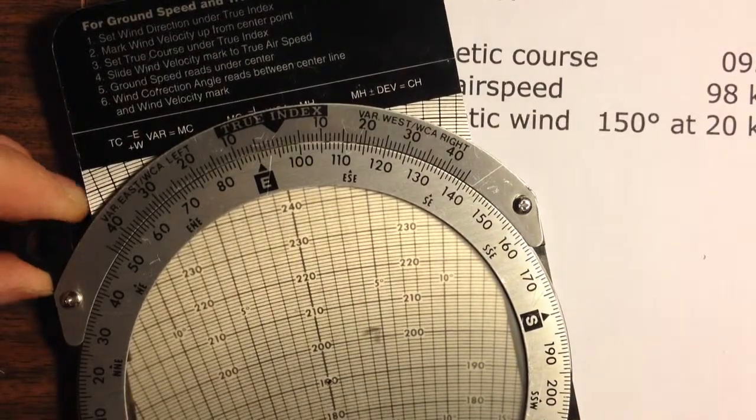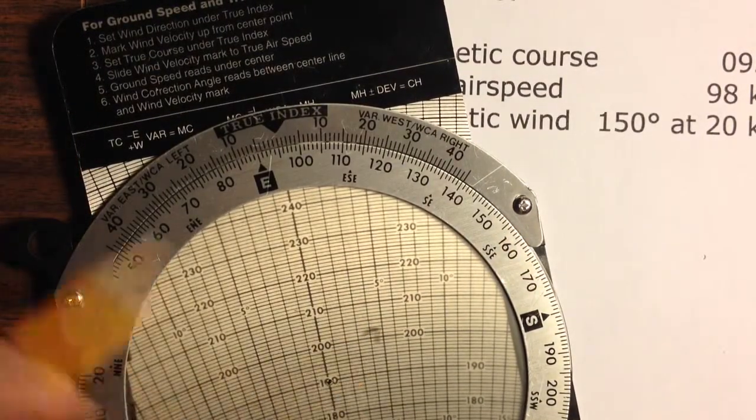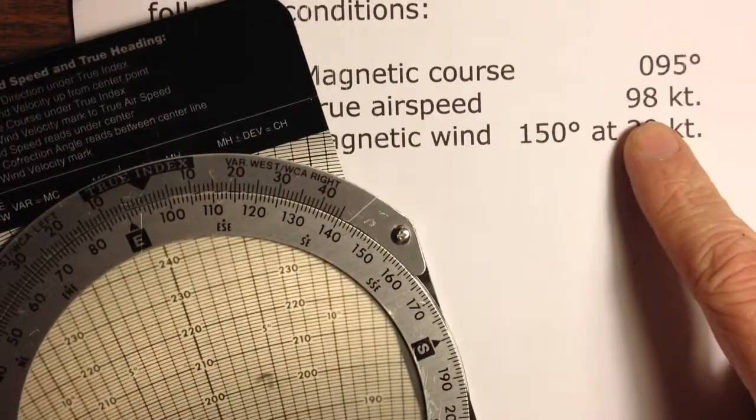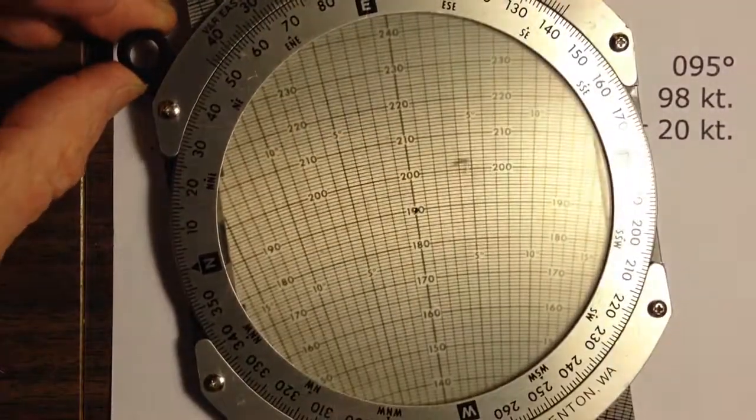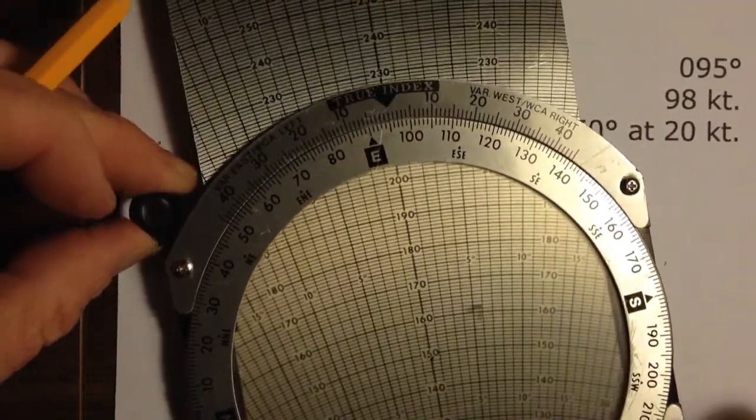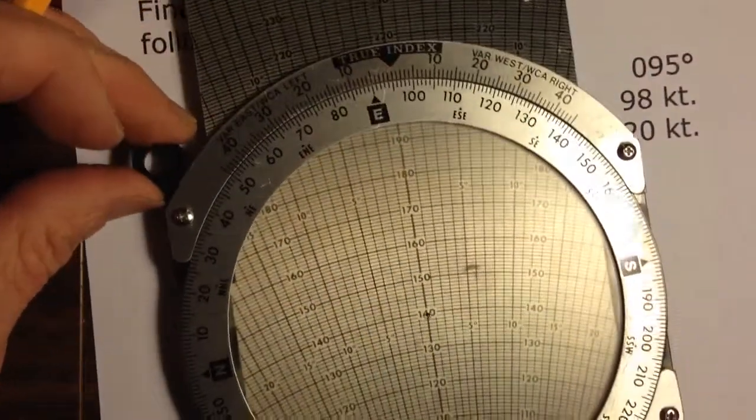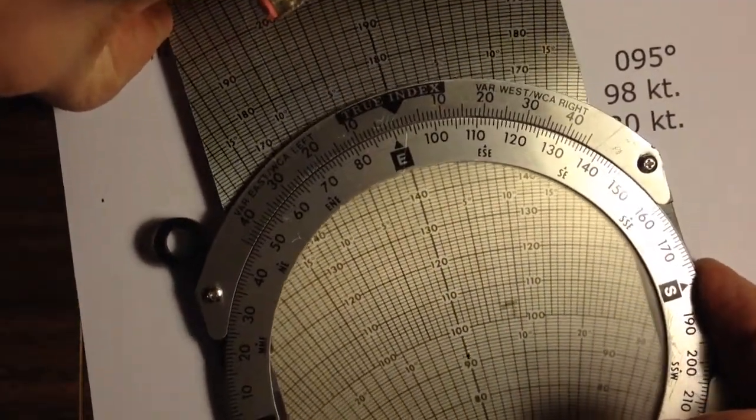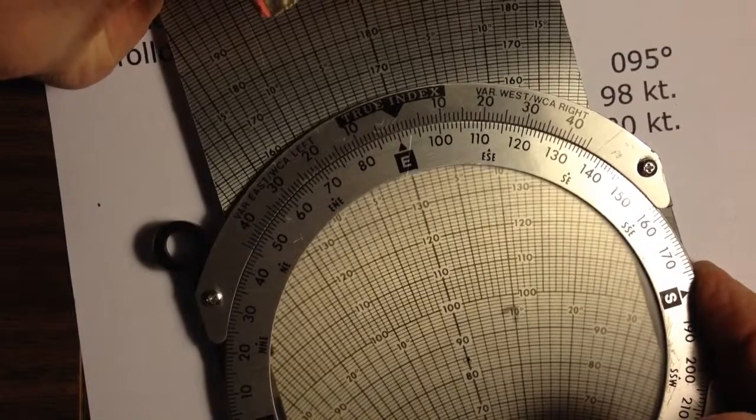And then I will put the velocity mark down to my true airspeed. My true airspeed should be 98 knots, so I'm going to slide that mark down until it's lined up with 98 knots on the scale. I have to go down here until I get to 98. Right there.